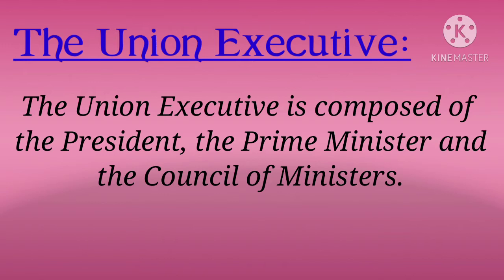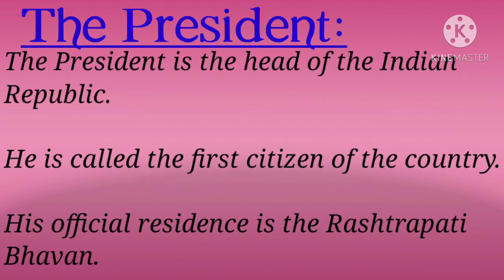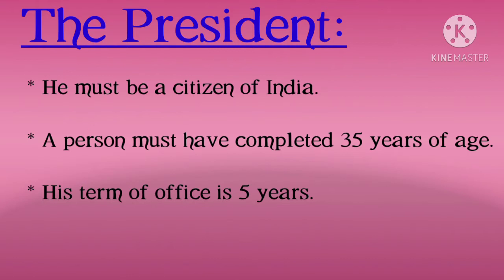We have discussed the Union Legislature. Now we will discuss the Union Executive. The Union Executive is composed of the President, the Prime Minister and the Council of Ministers. The President is the head of the Indian Republic. He is called the first citizen of the country. His official residence is Rashtrapati Bhavan. The elected members of both the Houses of Parliament and the members of the Legislative Assemblies of all the states elect the President of India.